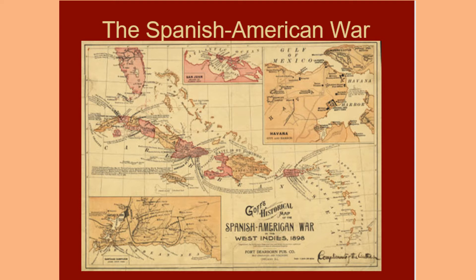By the end of the 19th century, Spain, once the most powerful colonial nation on earth, had lost most of its colonies. It retained only the Philippines and the island of Guam in the Pacific, a few outposts in Africa, and the Caribbean islands of Cuba and Puerto Rico in the Americas. U.S. involvement in Latin America and Asia increased greatly as a result of this war and actually continues to this day.